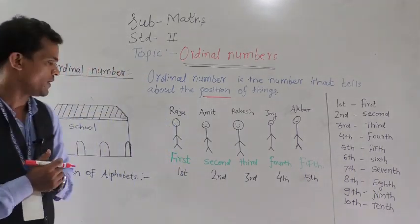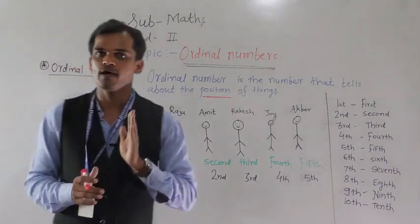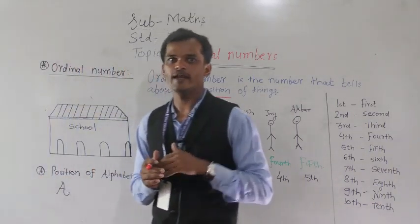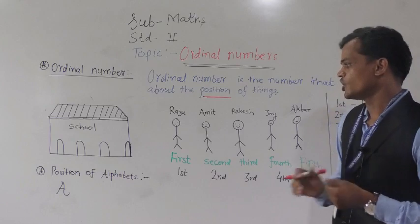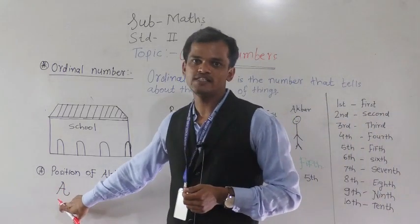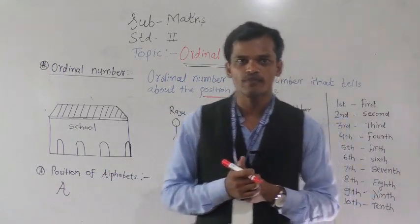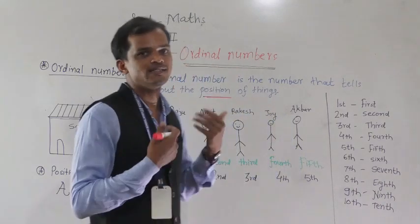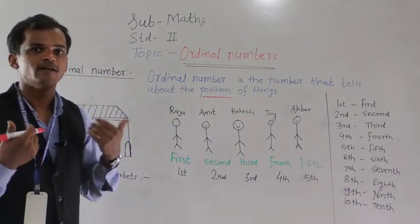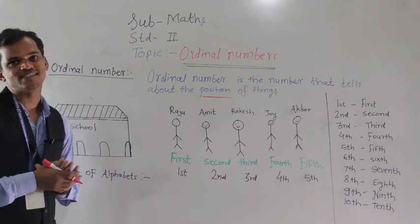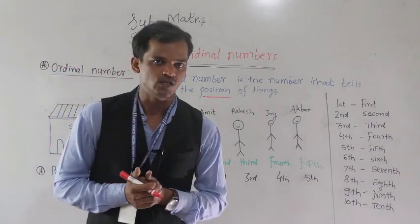In our alphabets, our alphabet series starts from A and ends with Z. You know that. So in our alphabet series, A comes first, then B second, C third, D fourth. Ordinal numbers tell the position of things.